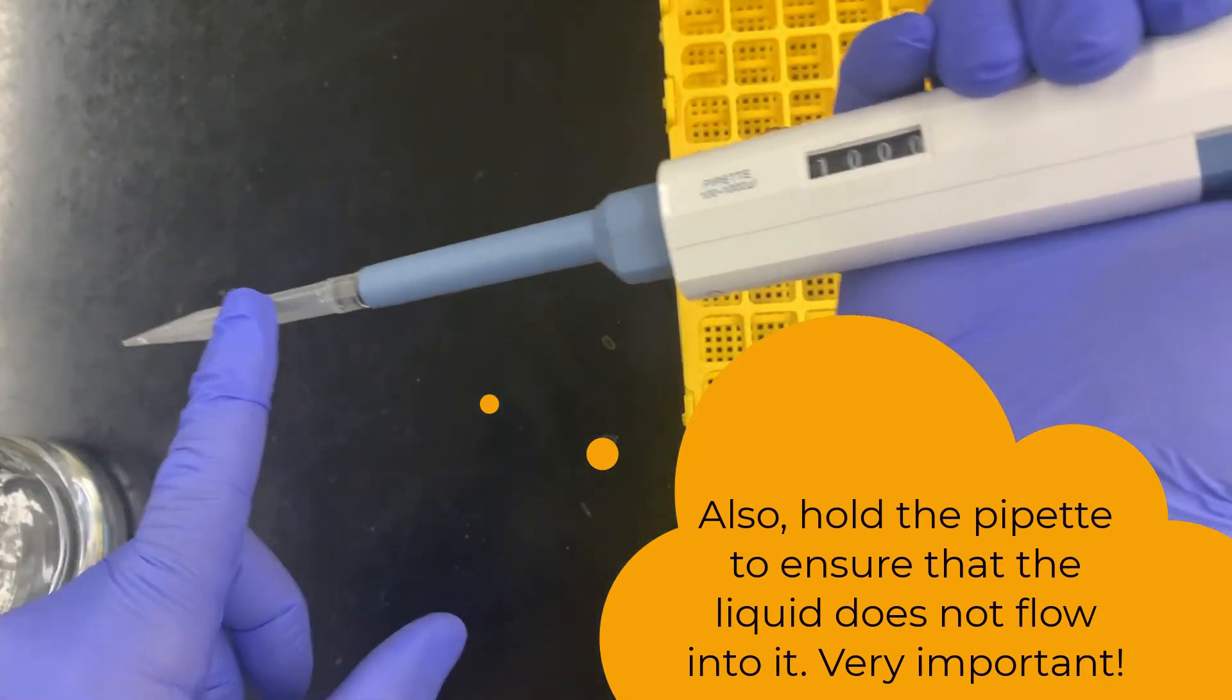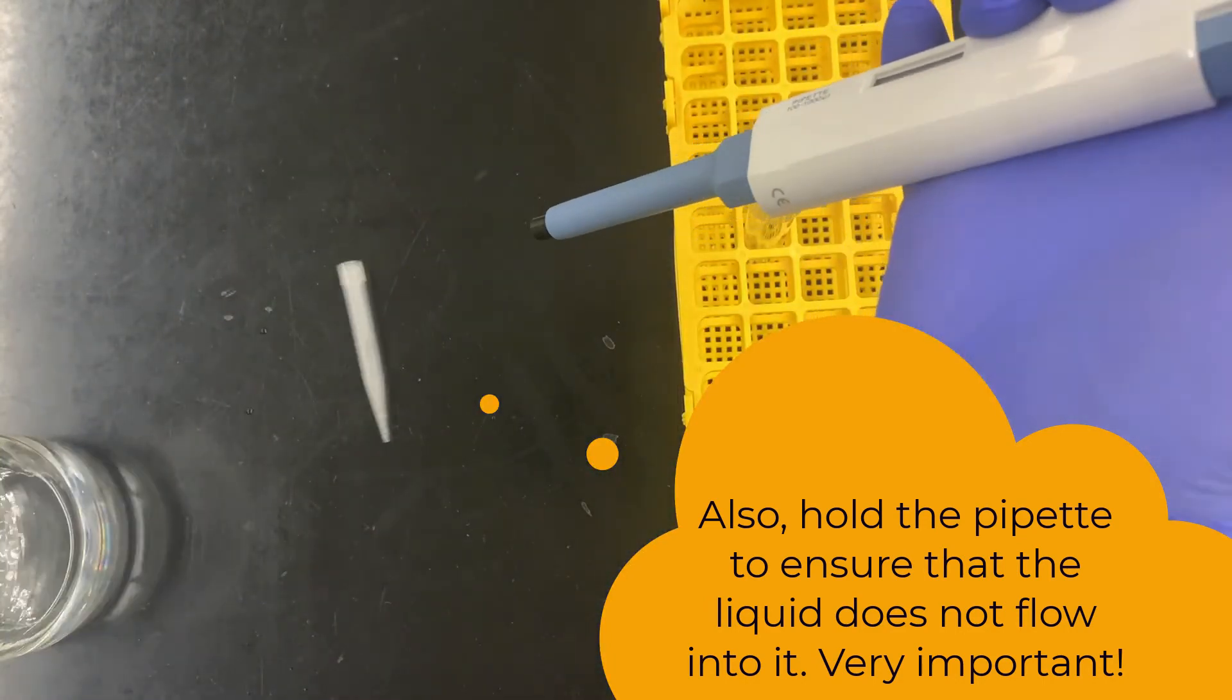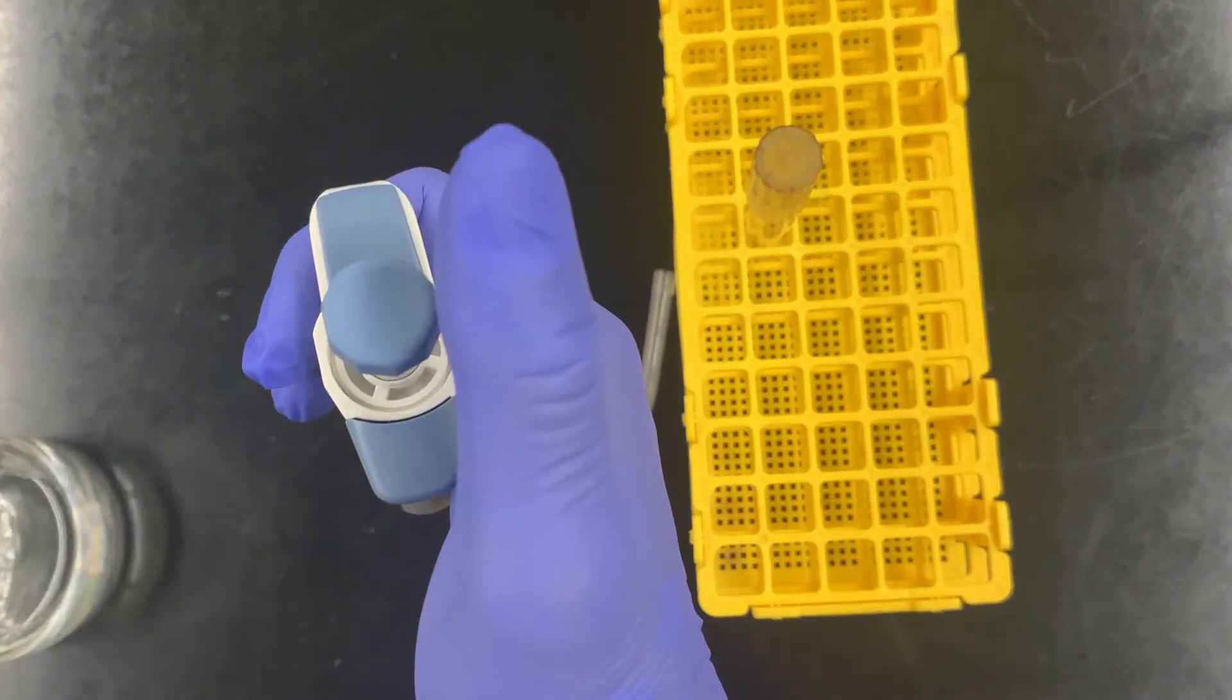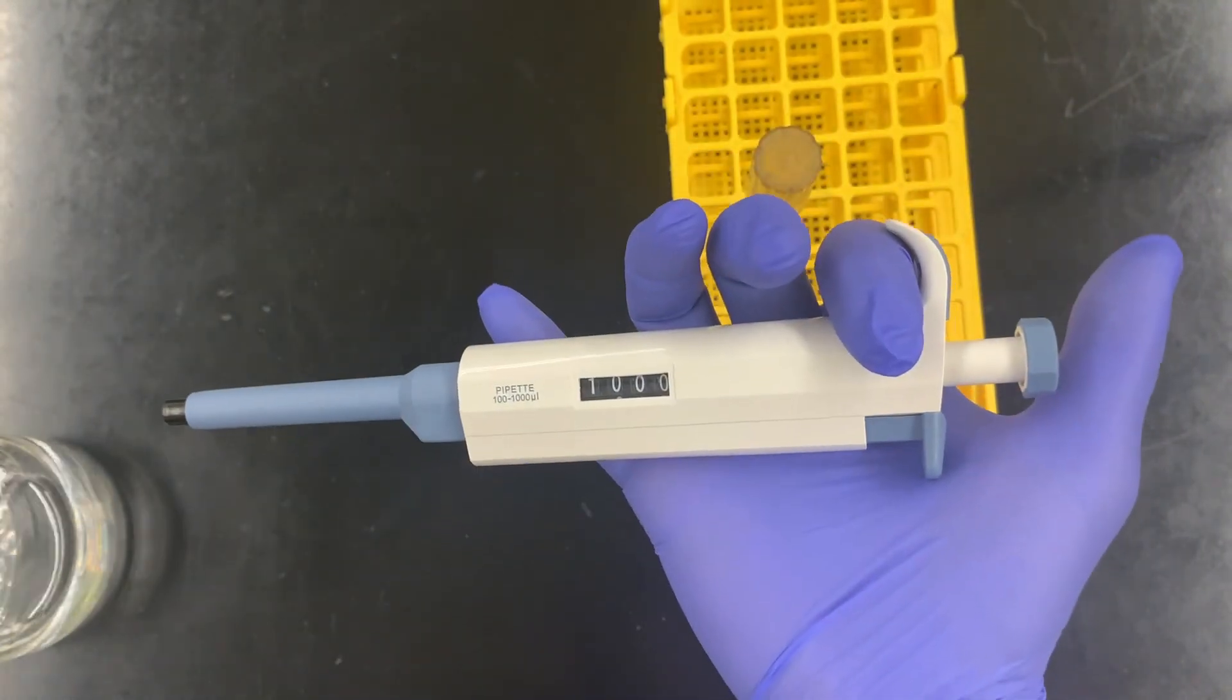To get rid of the tip, just hit this button, the tip comes out, and that should go into the biohazard. That's how we use a micropipette.